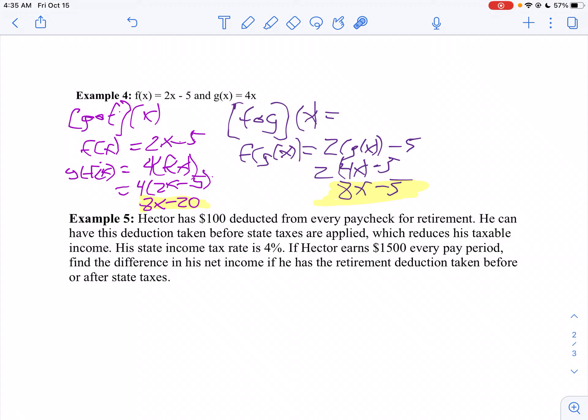His state tax rate is 4%. If Hector earned $1,500 every pay period, find the difference in his net income if he has a retirement deduction before or after state taxes.